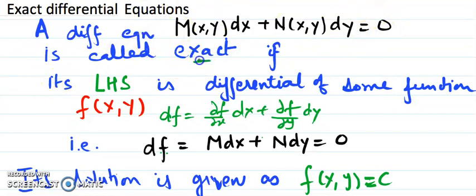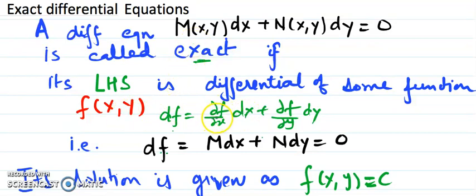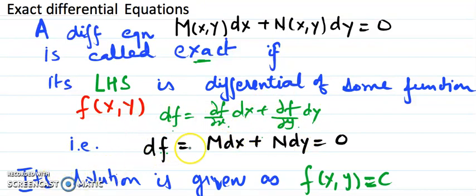Now when do we call it exact? If you see the left-hand side part — if this is the total derivative of some function — if you can find a function and say that the left-hand side is nothing but the derivative of that function. If you recall from the total differential, how to write df of any function of two variables: the dx coefficient is the partial differential of f with respect to x, and the dy coefficient is the partial differential of f with respect to y. So this derivative of f equals the left-hand side, meaning df equals 0, and the answer will be f(x,y) equals a constant.